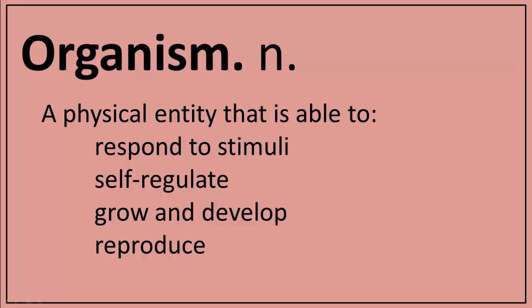Before we start, we must define what we mean when we talk about an organism. From a biological perspective, we can define an organism as something that can respond to stimuli, can maintain homeostasis to keep itself alive, can grow and develop, and can reproduce to produce fertile offspring.